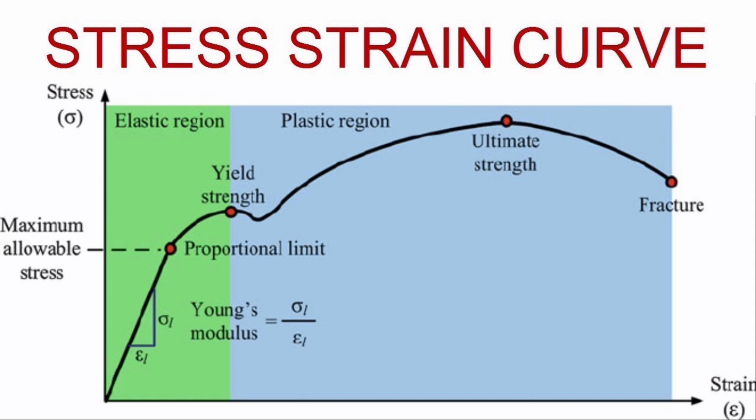Elastic limit is the point beyond which there is no return to original shape even when the stress is removed. This is basically a transition between the elastic zone and the plastic zone. Once material passes it, it can no longer display elastic properties. Yield point is the end of the phase where there is a permanent change in length with no extra stress.